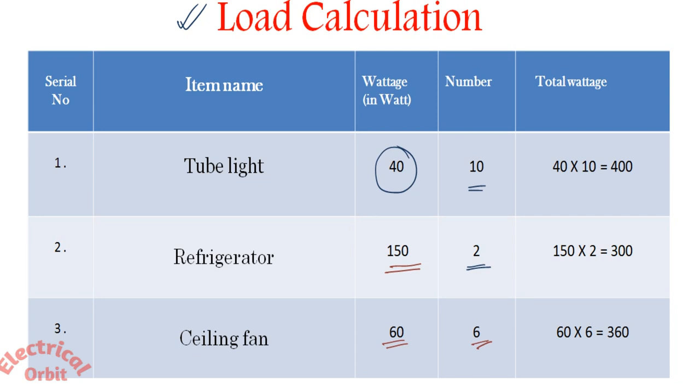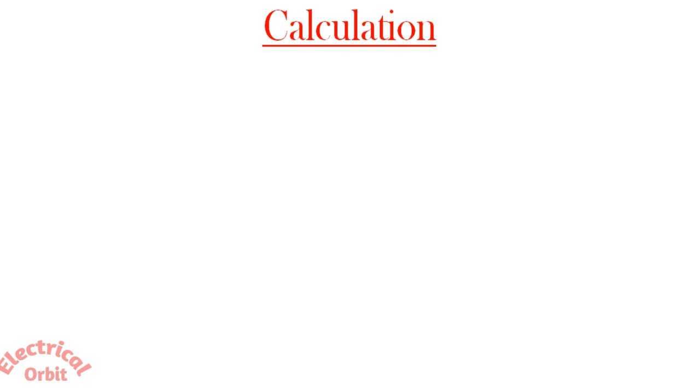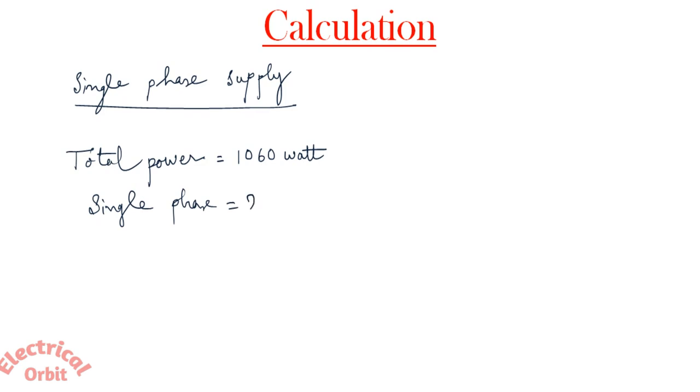Next we have two refrigerators which is 150 watt each and 60 watt rating 6 ceiling fans. So the total number of items here is 18 and their total wattage is 1060 watt. Now first we assume that all these loads are connected with single phase supply. So our total power is 1060 watt, single phase voltage is 230 volt.